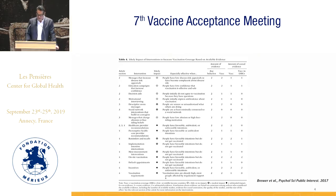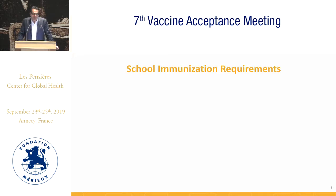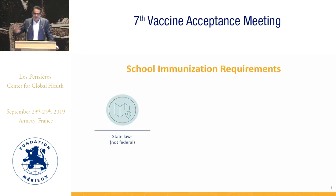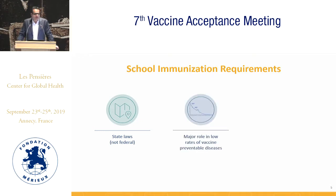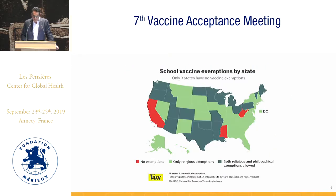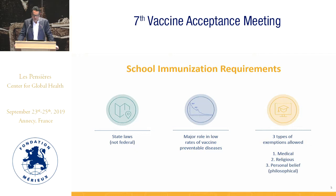In the US, where a lot of the work has come from, these are school-based requirements based on state laws, which provide us variability in measuring the impact of different versions of these laws. They have played a major role in lowering and keeping low the rates of vaccine-preventable diseases, but they allow for three types of exemptions.